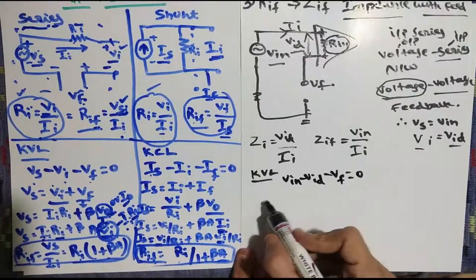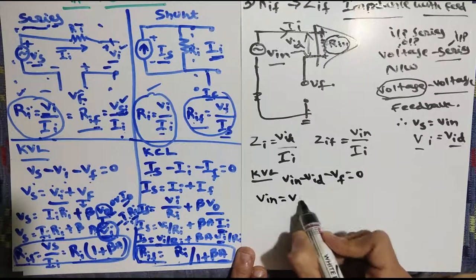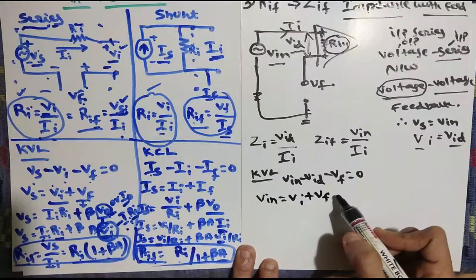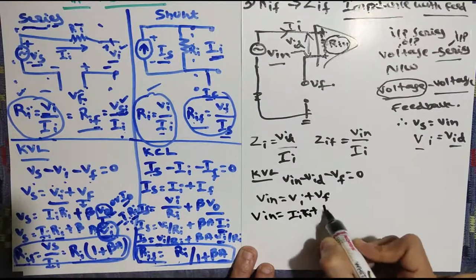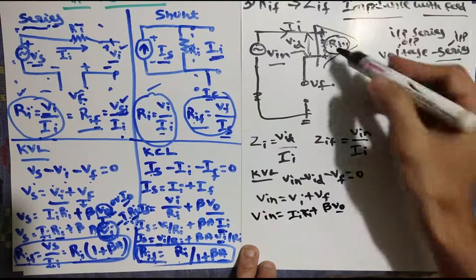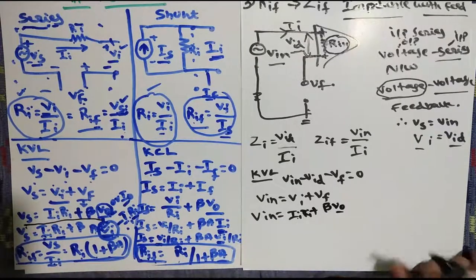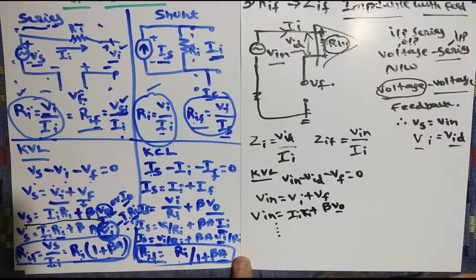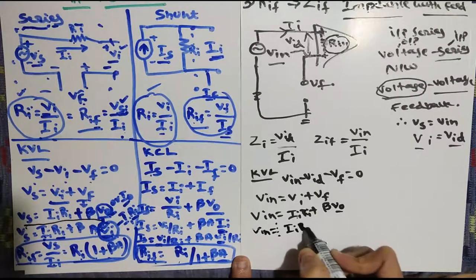We need to find Vin for the next operation. Vin is equal to VI plus VF. So VI is nothing but IIRI plus beta times V_naught, because V_naught is our output. Simplifying, this portion is the same as before. After simplification, you will get Vin is equal to IIRI plus beta times V_naught.